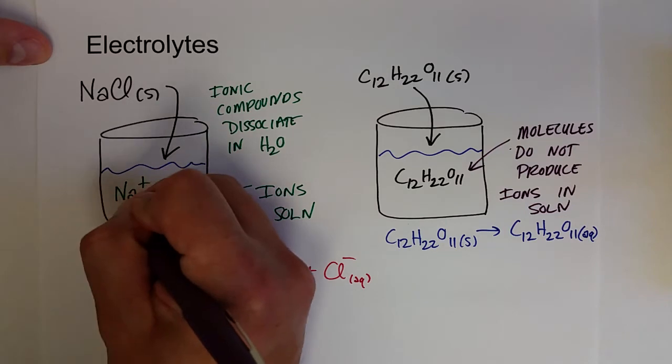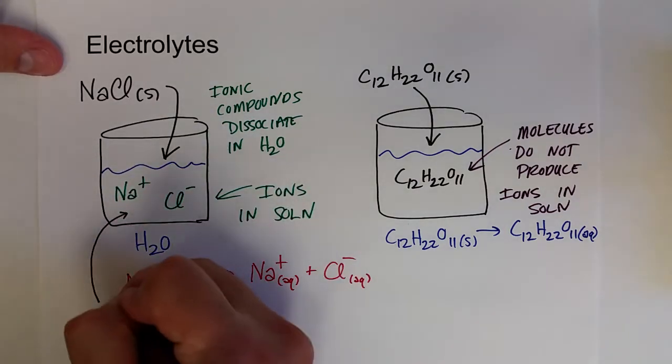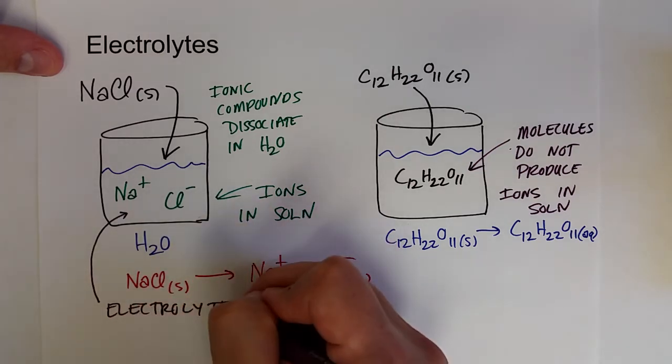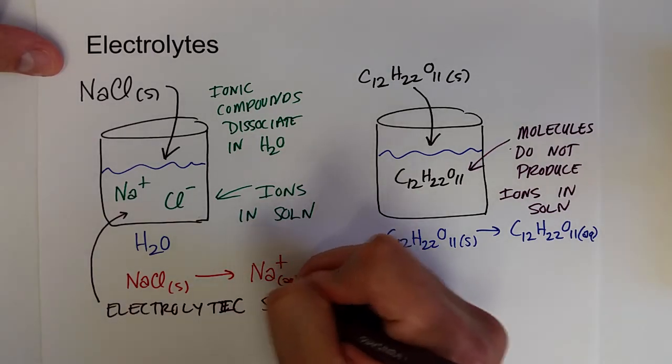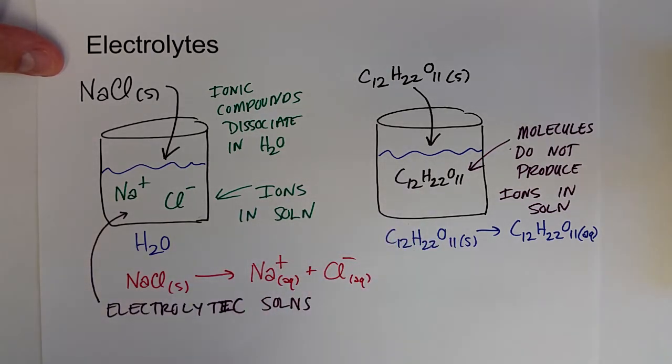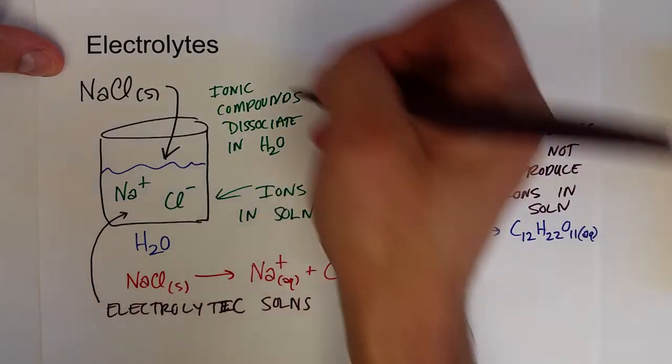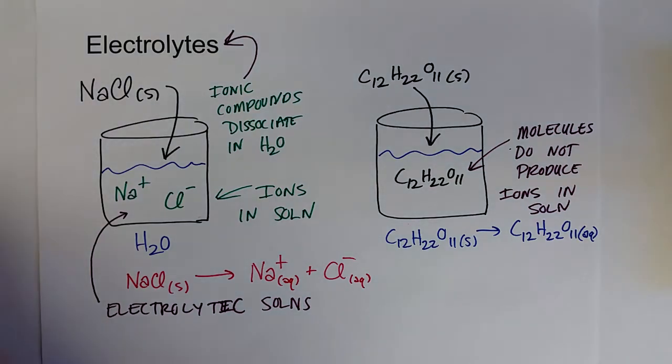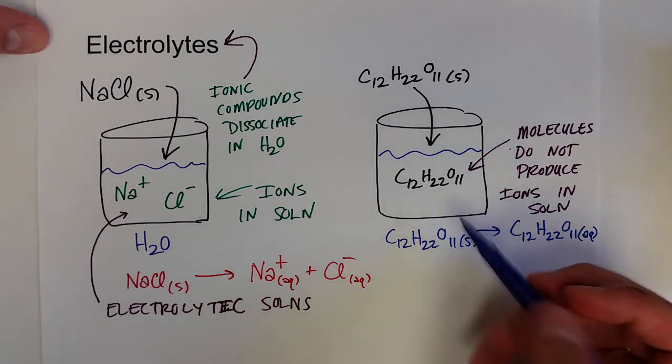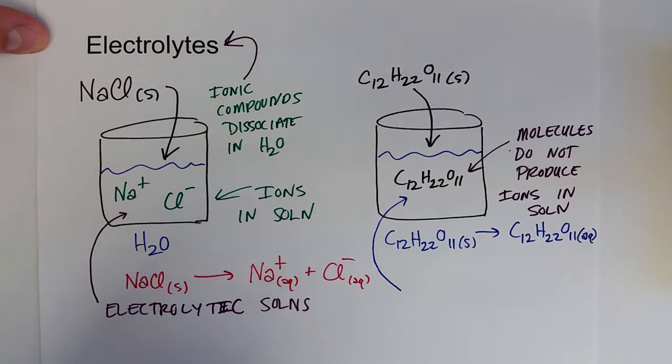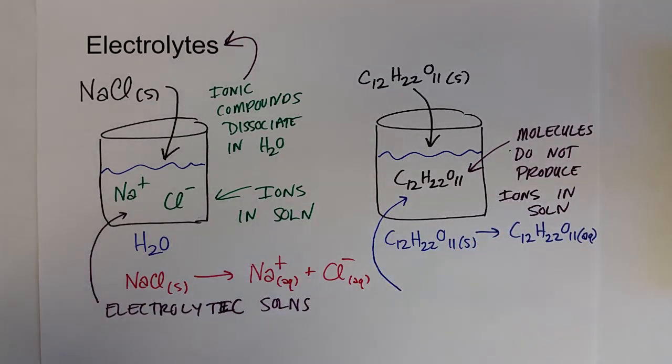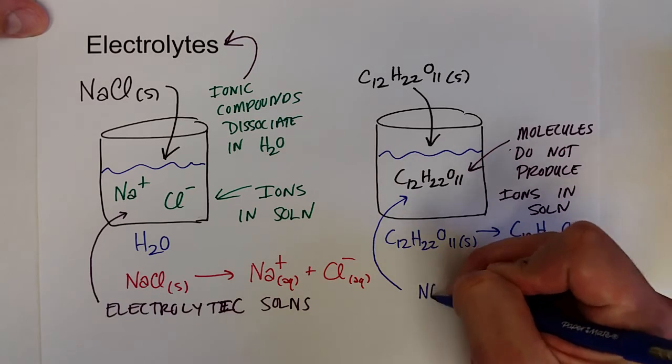So what we call these types of solutions that conduct electricity is that we call them electrolytic solutions. And so any type of compound that causes the aqueous solution to conduct electricity is called an electrolyte. So ionic compounds are electrolytes. Since molecules that are not acids or bases, neutral molecules, do not cause water to conduct electricity, or they do not form an electrolytic solution, they are called non-electrolytes.